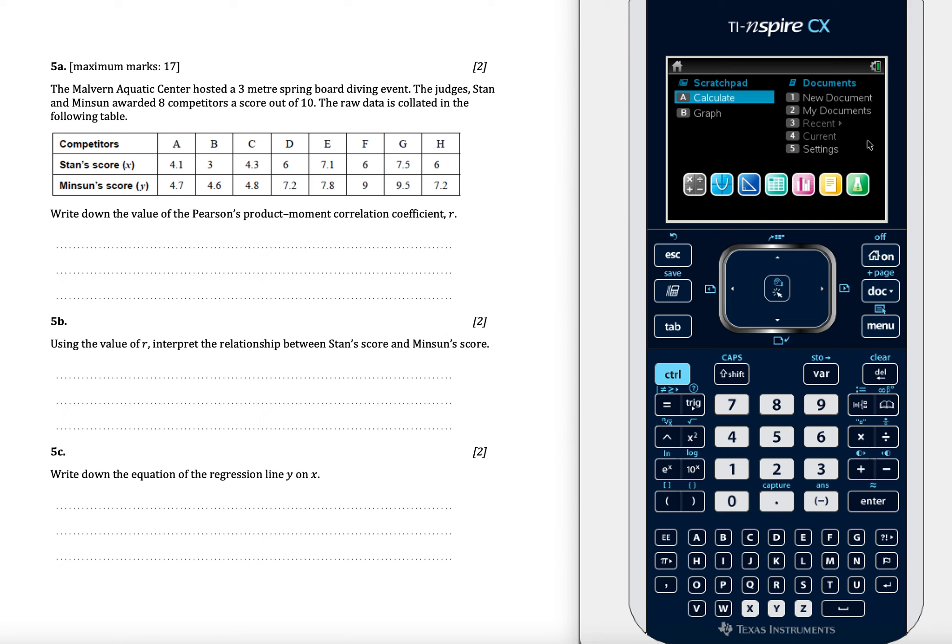This video is going to take us through how we're going to carry out this question on the GDC. The Melbourne Aquatic Centre data is collected in the table. Find the Pearson's Product Moment Correlation Coefficient.